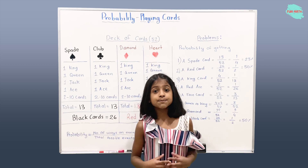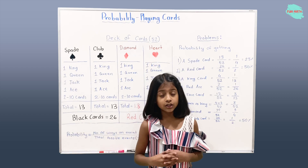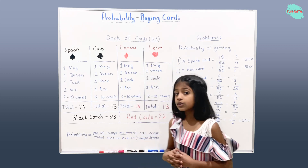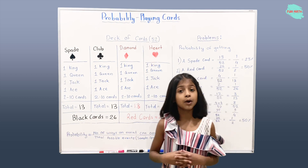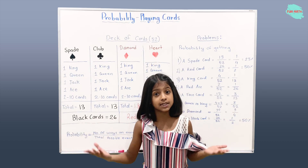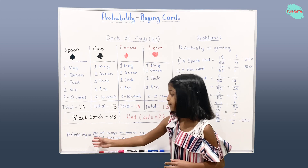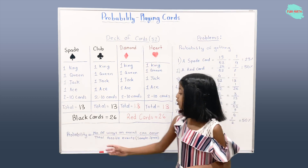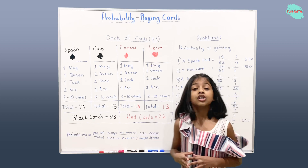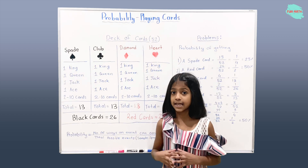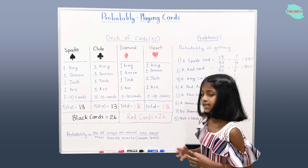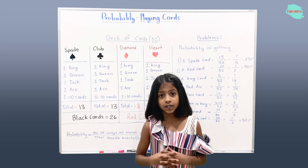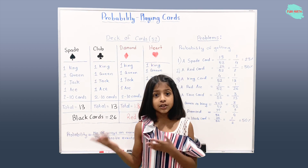So what is probability? We already talked about this in another video. Here is a formula for probability: probability is nothing but just number of ways an event can occur over total possible events. Total possible events can also be said as sample space, which we will be talking about in another video.